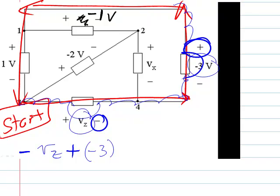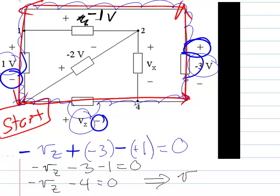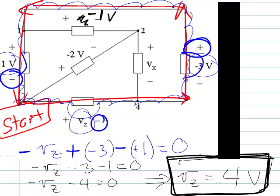We keep going and we've got plus 1 here, but when we jump across we see it's actually a drop in voltage, so we have minus positive 1. Then we end up at the start, so we set it equal to zero. We've got negative VZ minus 3 minus 1 equals 0. So negative VZ minus 4 equals 0, and therefore most fabulously we discover that VZ is equal to negative 4 volts. So everywhere we have VZ we can now write negative 4 volts.